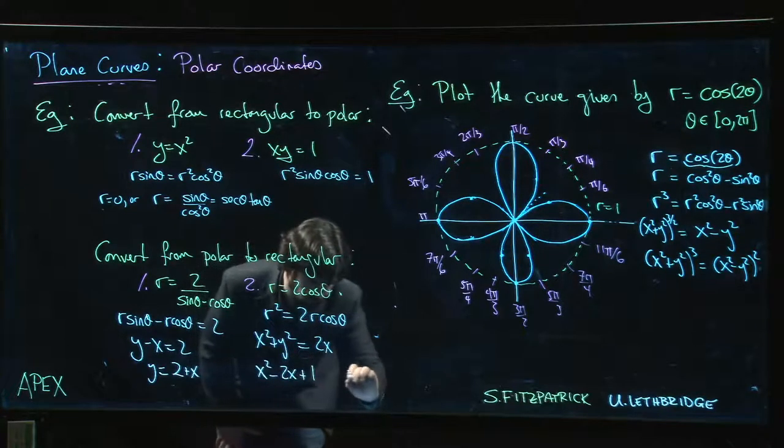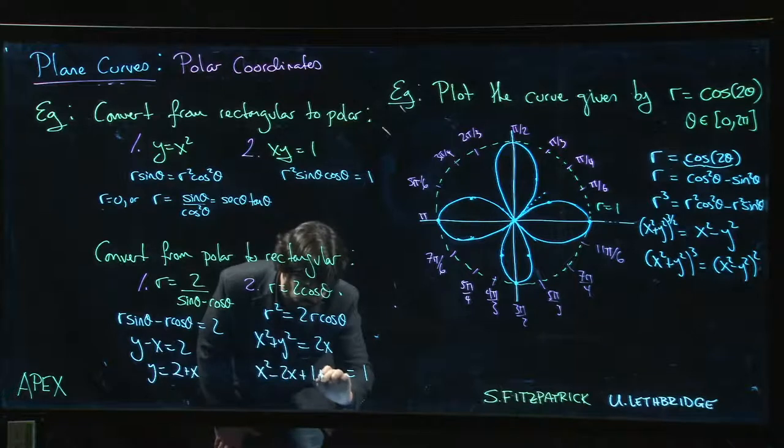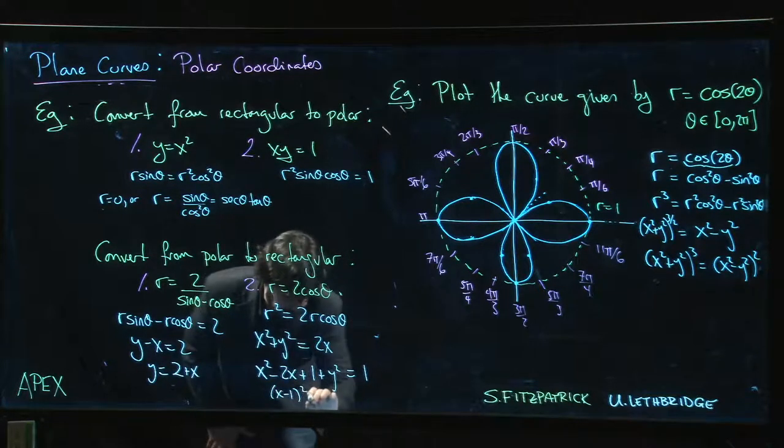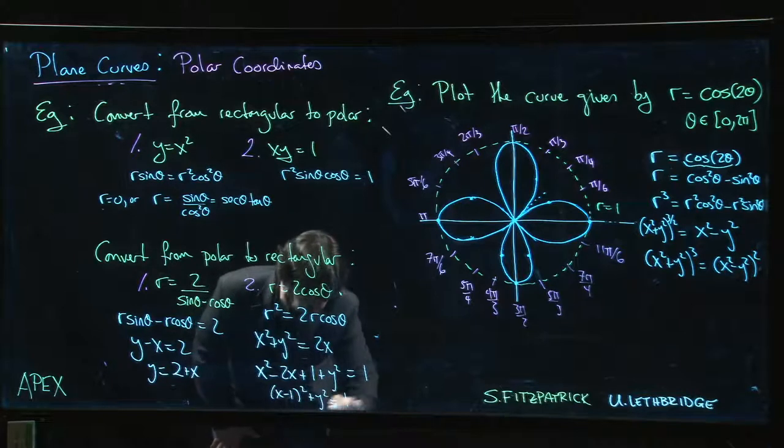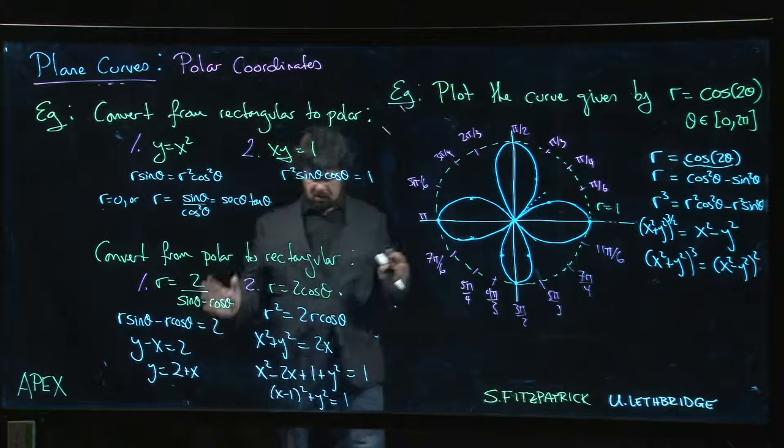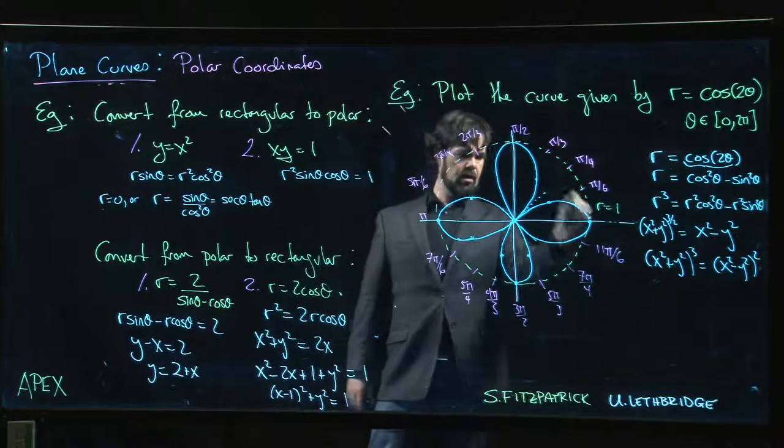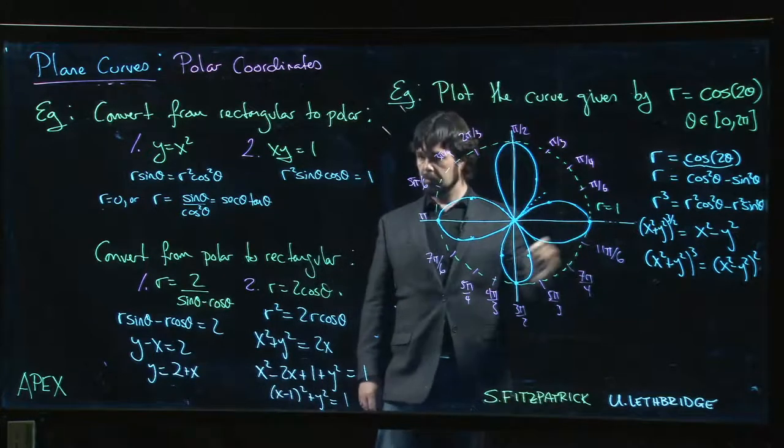I see that I get (x - 1)² + y² equals 1. So it's a circle of radius 1 that's been shifted one unit to the right.